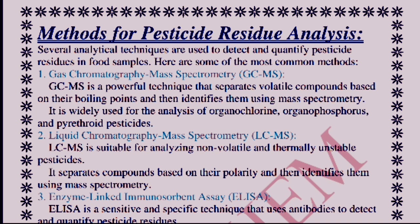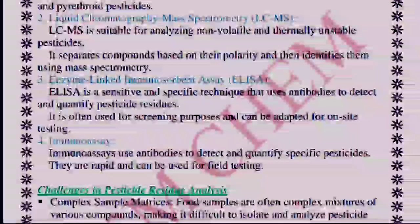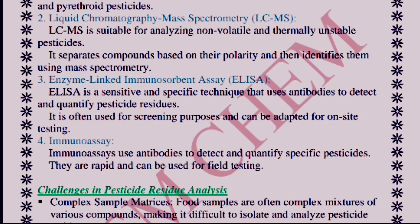The second method is liquid chromatography-mass spectrometry (LC-MS), used for analyzing non-volatile and thermally unstable pesticides. Next is enzyme-linked immunosorbent assay (ELISA), where sensitive antibodies are used to detect and quantify pesticide residues. The last method is immunoassay, where antibodies detect specific pesticides rapidly and can be used for field testing.